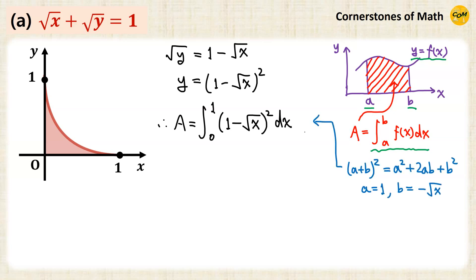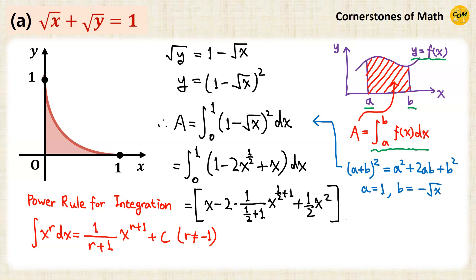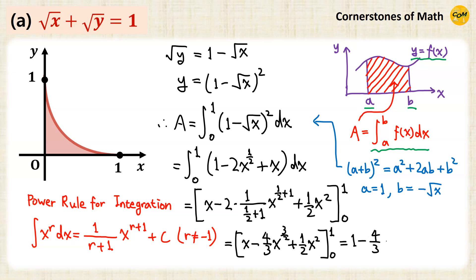So let's square the integrand using the famous formula. It is actually beneficial if we use fractional exponents like x to the power of 1/2, because then we can easily apply the power rule of integration. So we have x minus 2 times (1 over (1/2 + 1)) x to the power of 3/2. Then the integral of x is 1/2 x squared. So we have x minus 4/3 x to the power of 3/2 plus 1/2 x squared, which gives 1 minus 4/3 plus 1/2, which equals 1/6.